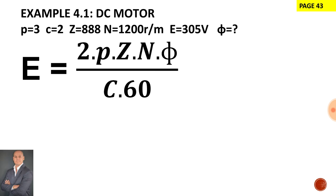We'll be looking at example 4.1 inside the textbook on page 43. This is a six pole machine therefore there are three pairs. It is wave-wound therefore the number of parallel paths is 2. The total number of armature conductors is 888 and the speed at which the armature rotates is 1200 revs per minute.